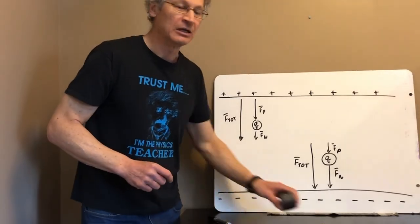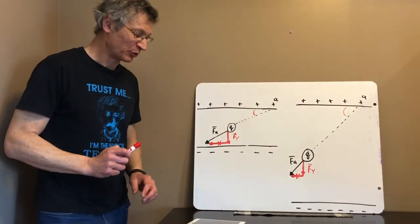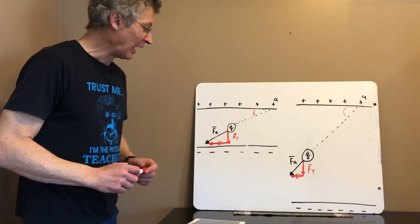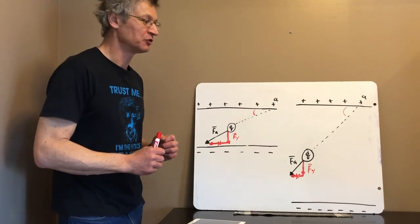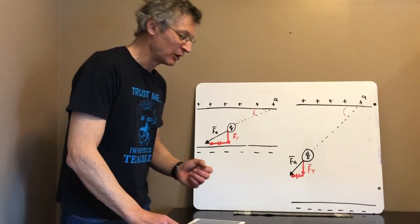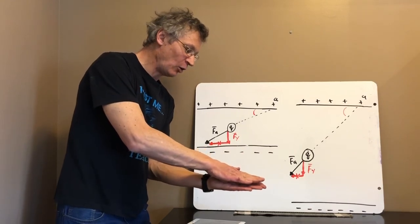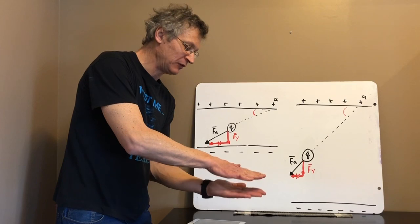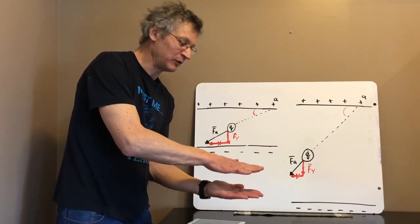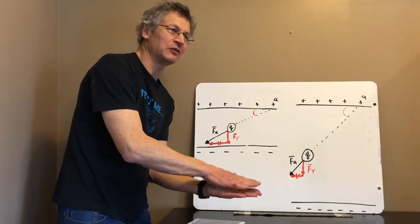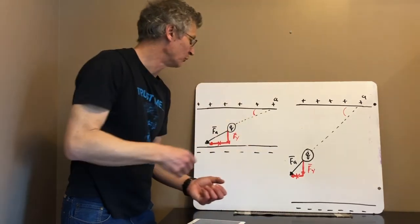Characteristic number three: the electric field does not depend on plate separation. As long as you don't get too close to the edge, it doesn't matter whether the plates are really close together or further apart — the electric field is going to stay the same. Plate separation has nothing to do with electric field, as long as the plates are still considered large plates.